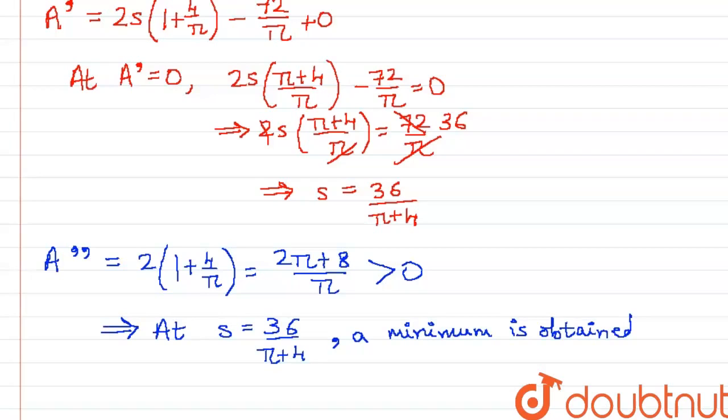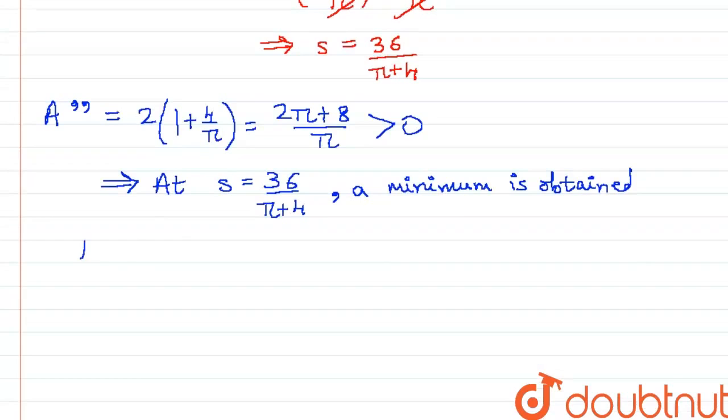So let us hence find each of the lengths of the pieces. The first piece for the square will be 4s which is 144/(π plus 4).